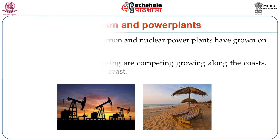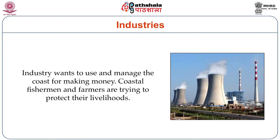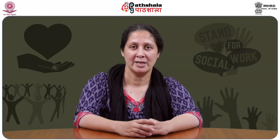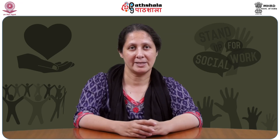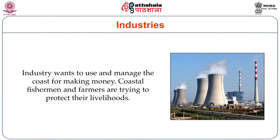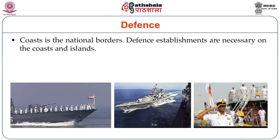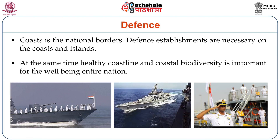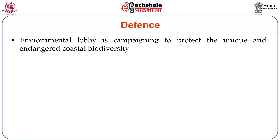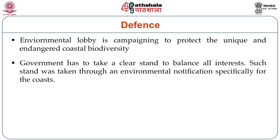Each wants a piece of the coast. Industry wants to use the coast for making money and manage it so that industrial development takes place. Coastal fishermen and farmers are trying to protect their agriculture, horticulture, and fisheries. The coast is also our national border, and defense establishments are necessary on the coast and islands. At the same time, we need a healthy coastline. Coastal biodiversity is important for the well-being of coastal ecosystems. The environmental lobby is campaigning to protect the coast for its unique and globally important biodiversity. Government has to take a very clear stand to balance all these different interests.